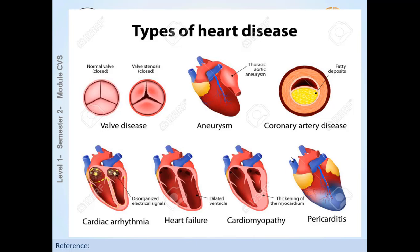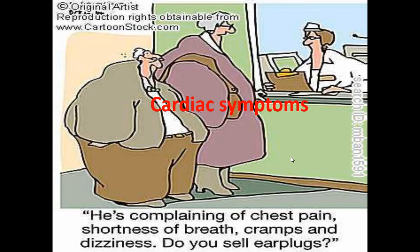The scope of heart disease includes many conditions: valvular heart disease, diseases of the blood vessels such as aortic aneurysm, coronary artery disease which is the major cause of ischemic heart disease, cardiac arrhythmia, heart failure, cardiomyopathy, and pericarditis. These are examples of the different types of heart disease. If a patient has heart disease, what is their complaint? These are the common cardiac symptoms.